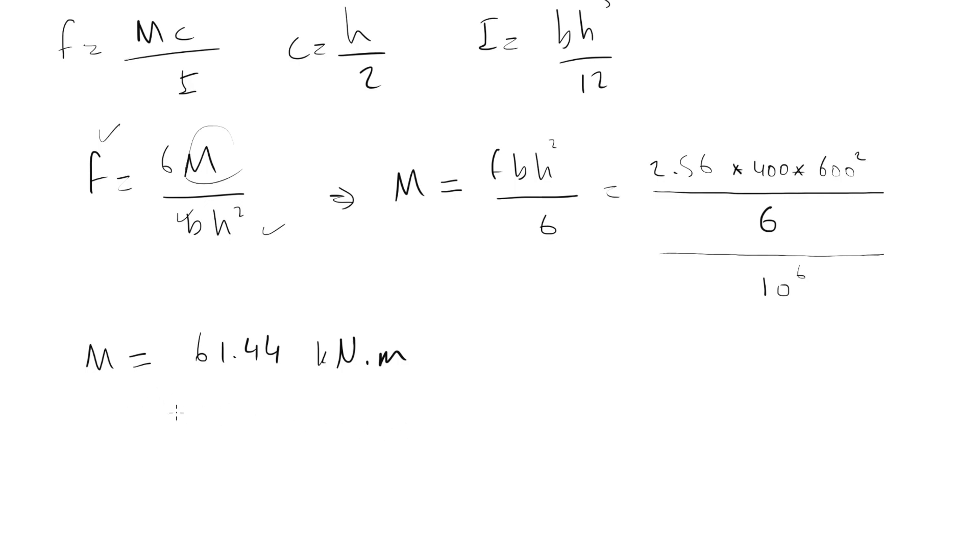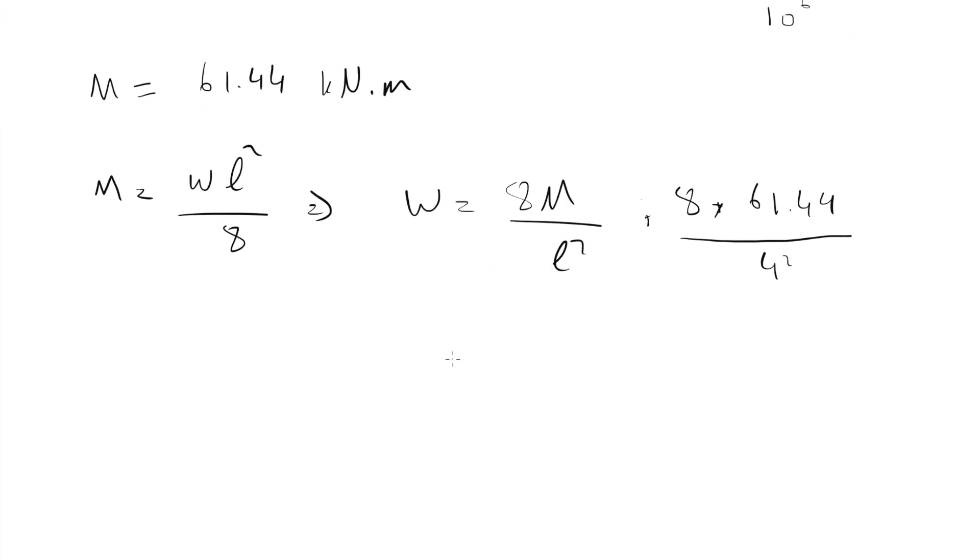Now from this value, we can say M equals to W L squared by 8. Again, leaving W alone, so W equals to 8M divided by L squared. So 8 multiplied by 61.44 divided by L is 4 meters, so it will be 4 squared. We can get the value of W equals to 30.72 kilonewton per meter.